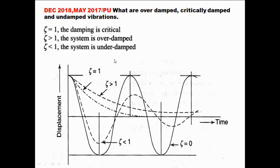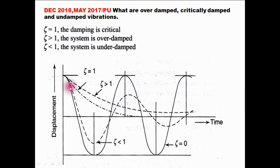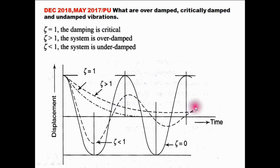Looking at the image: the curve with constant amplitude in each cycle represents free or undamped vibration. When eta is less than 1 (under-damped), the amplitude decreases each cycle and the system finally comes to rest — it executes vibratory motion but eventually comes to rest. The ratio of successive amplitudes is constant.